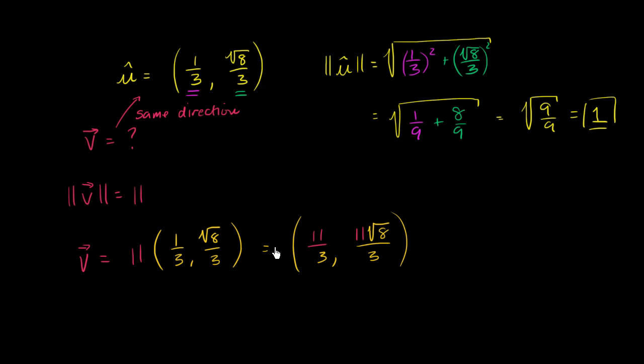And I encourage you, if you don't believe me, try and I guess on one level it should make sense that when you multiply a vector times a scalar like this, it just scales it in that direction by this factor. So if your magnitude was 1, your magnitude will now be 11 in that direction.